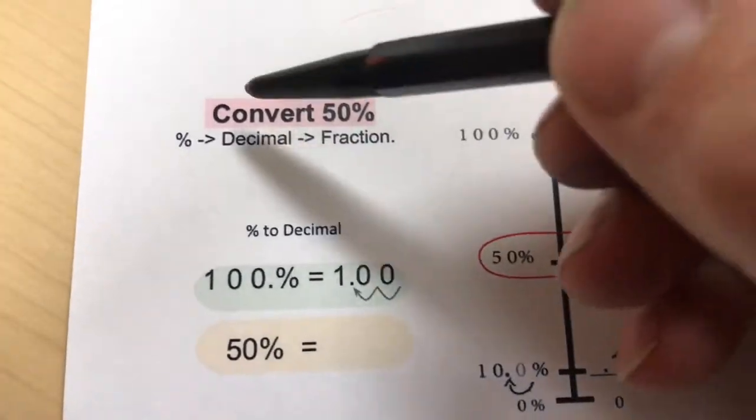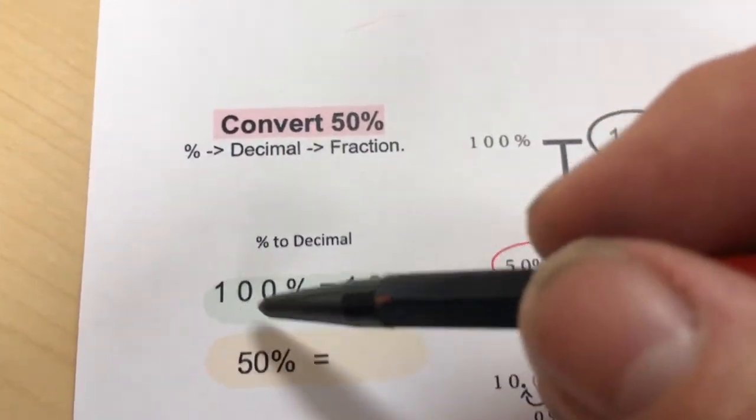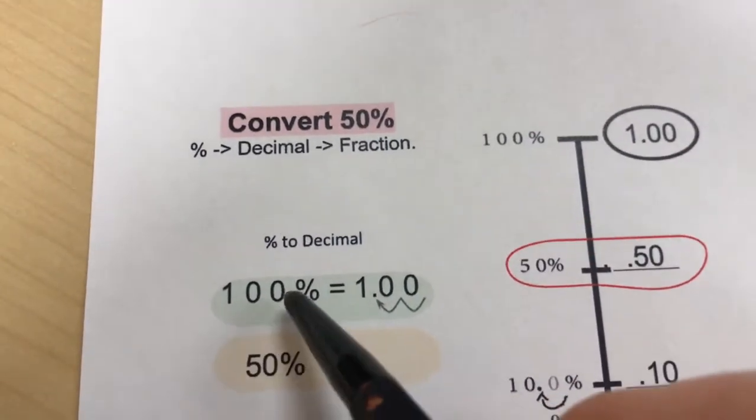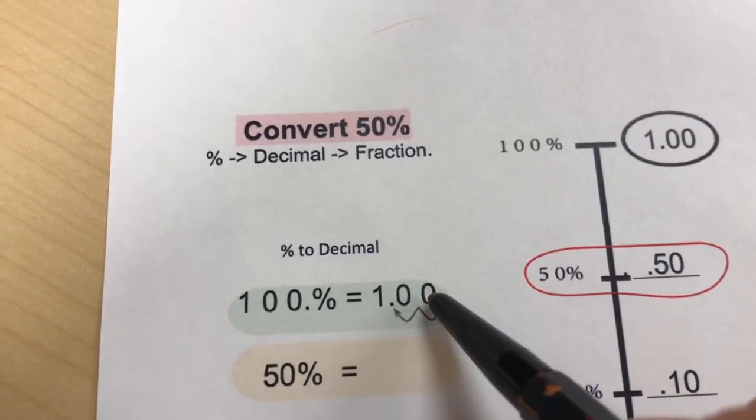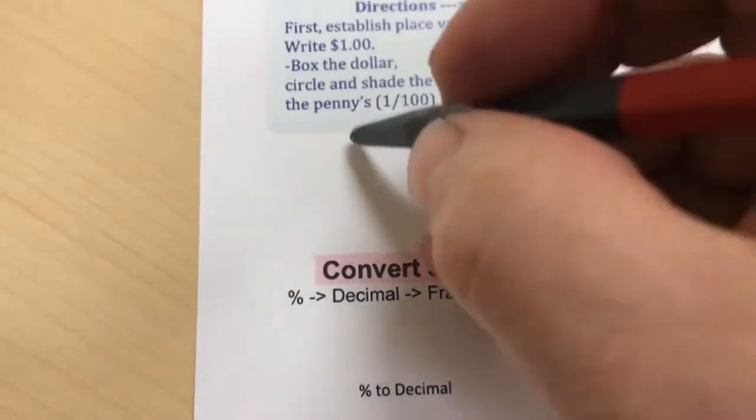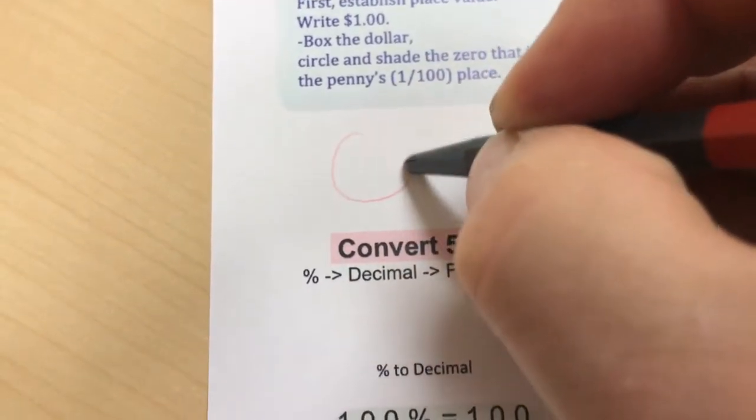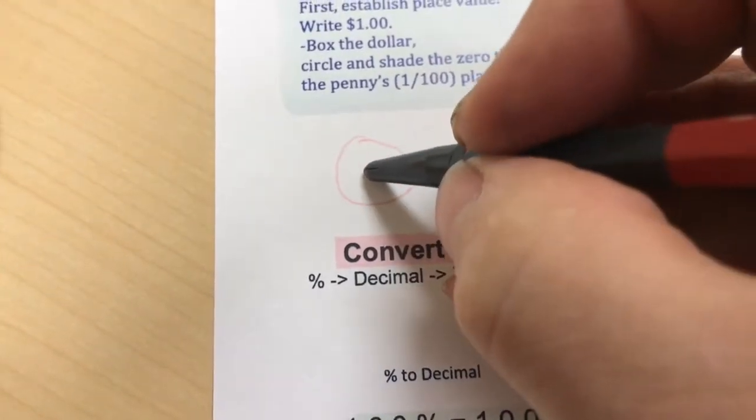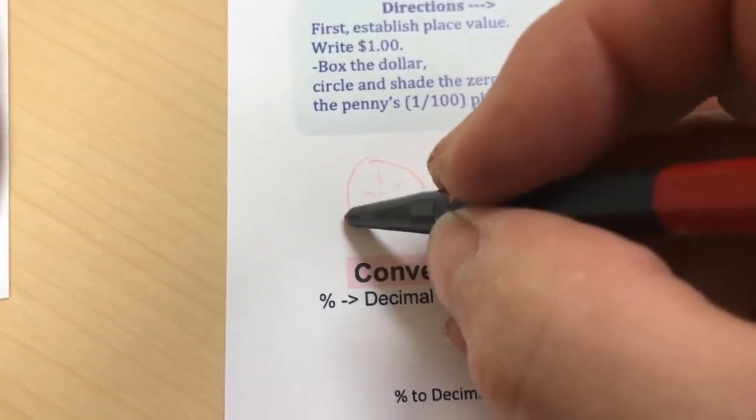We're going to start out with 50%. If you think about this, think about how 100% looks like 1. I always think about this picture. Here's 1 pie. Do you see it? Maybe it's your favorite kind of pie. Maybe it's an apple pie.